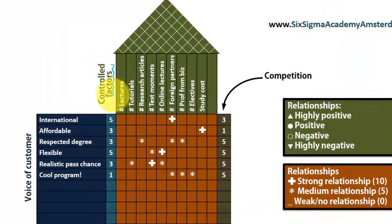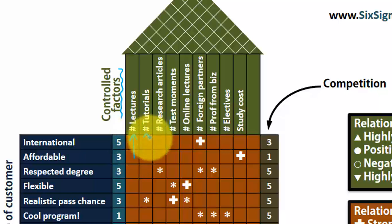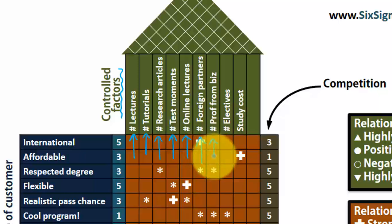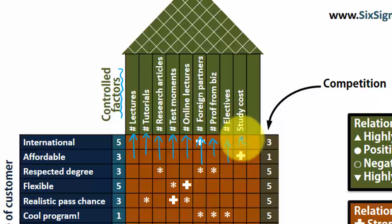On top, we see the factors that we control — for instance, the number of lectures, tutorials, research articles our professors publish per year, the number of test moments, online lectures, foreign partner universities, professors from the business world, elective courses, and study cost. We control a lot more, but we cut it off here since this is just an example.